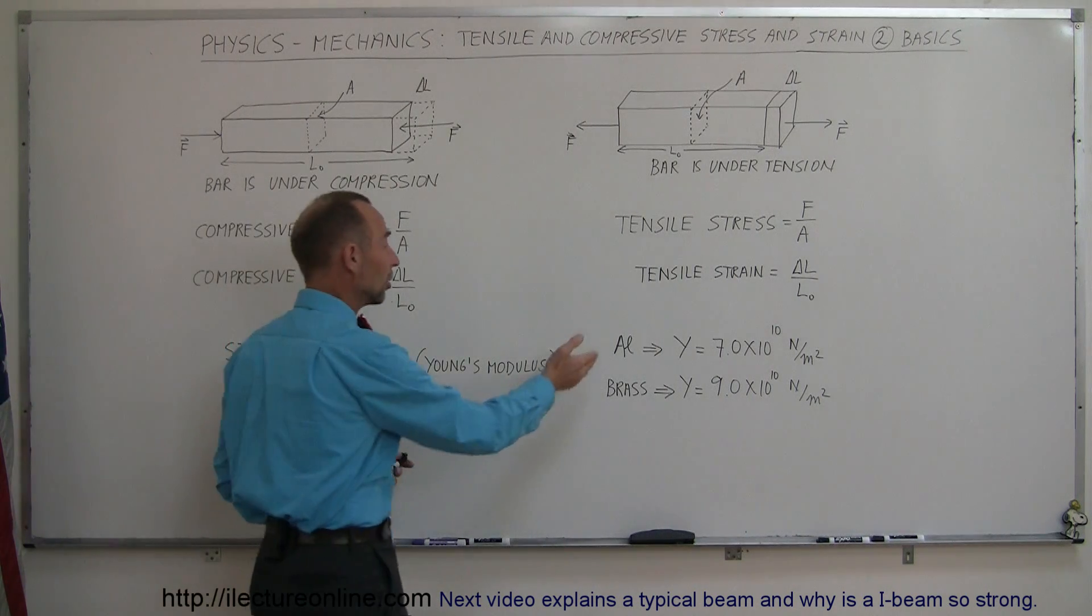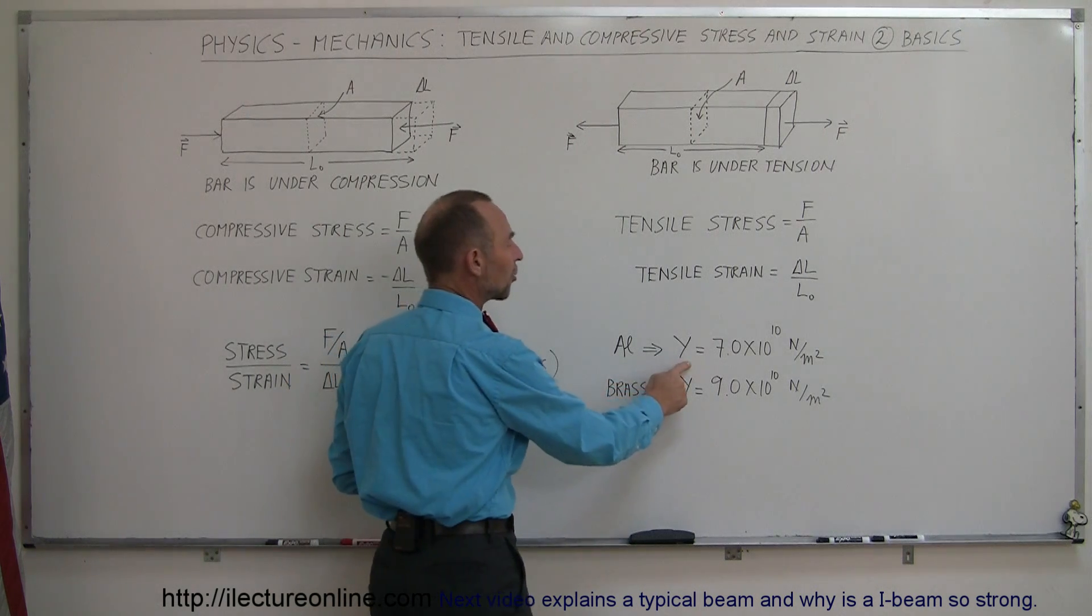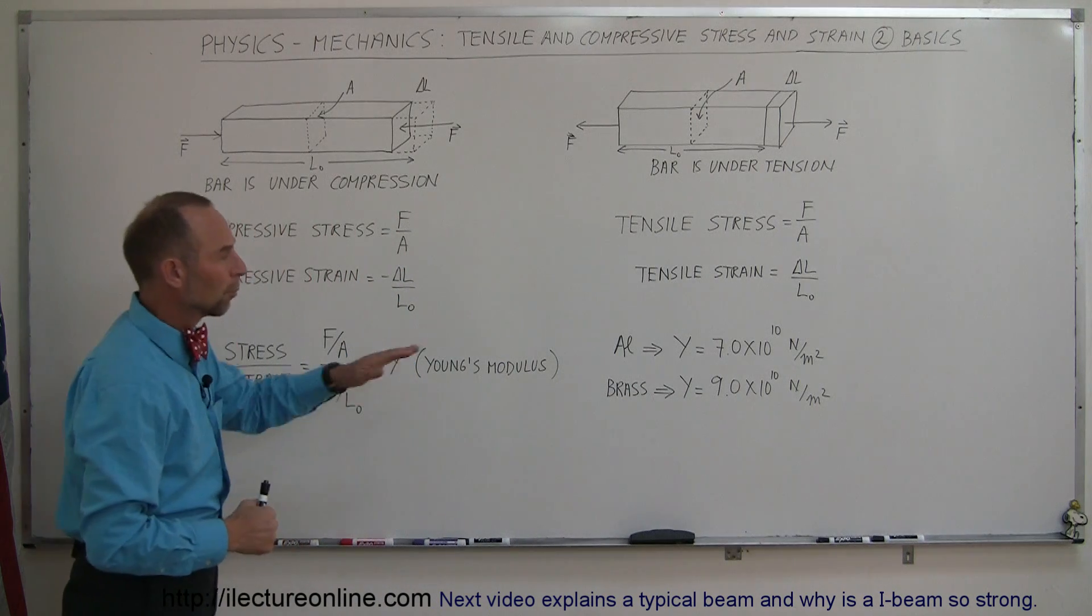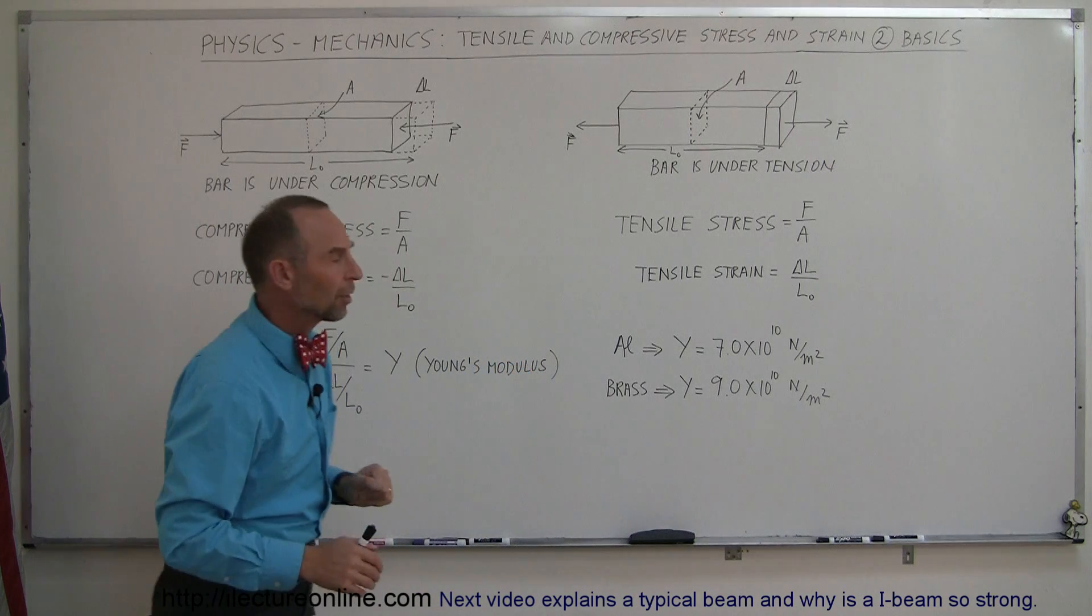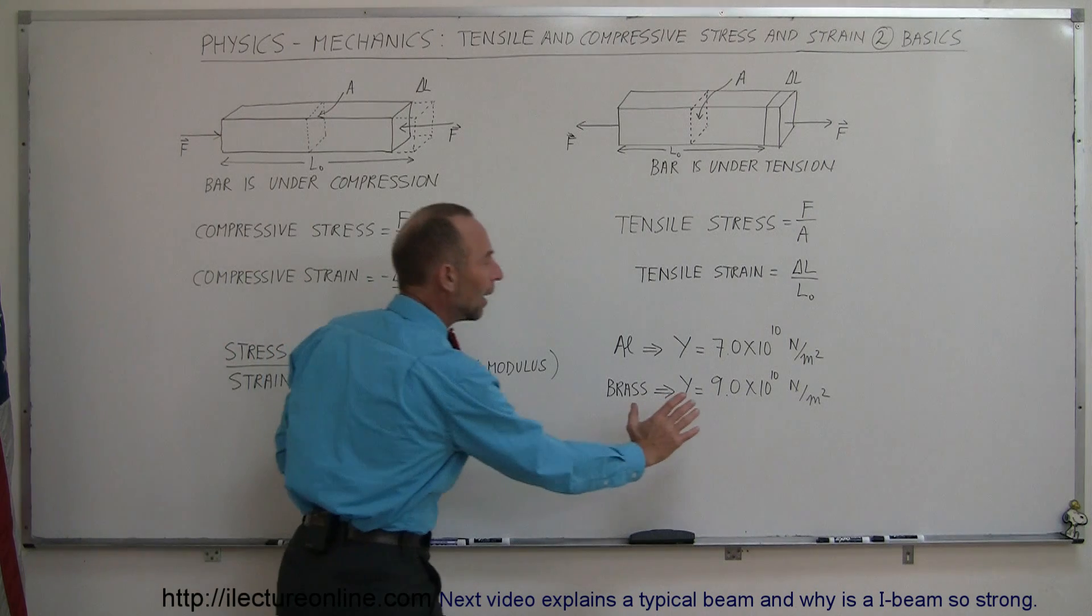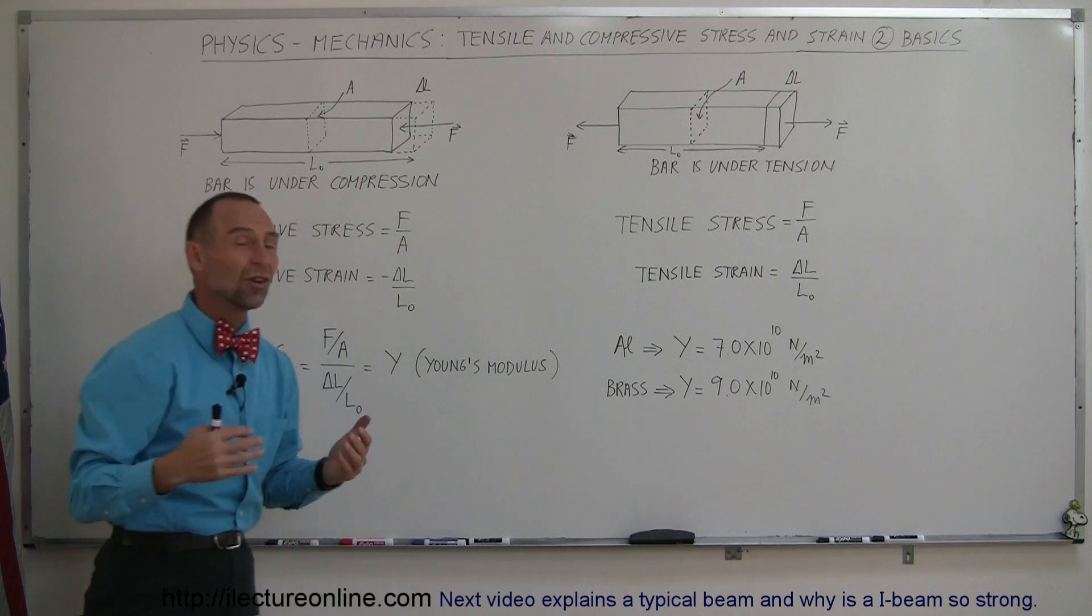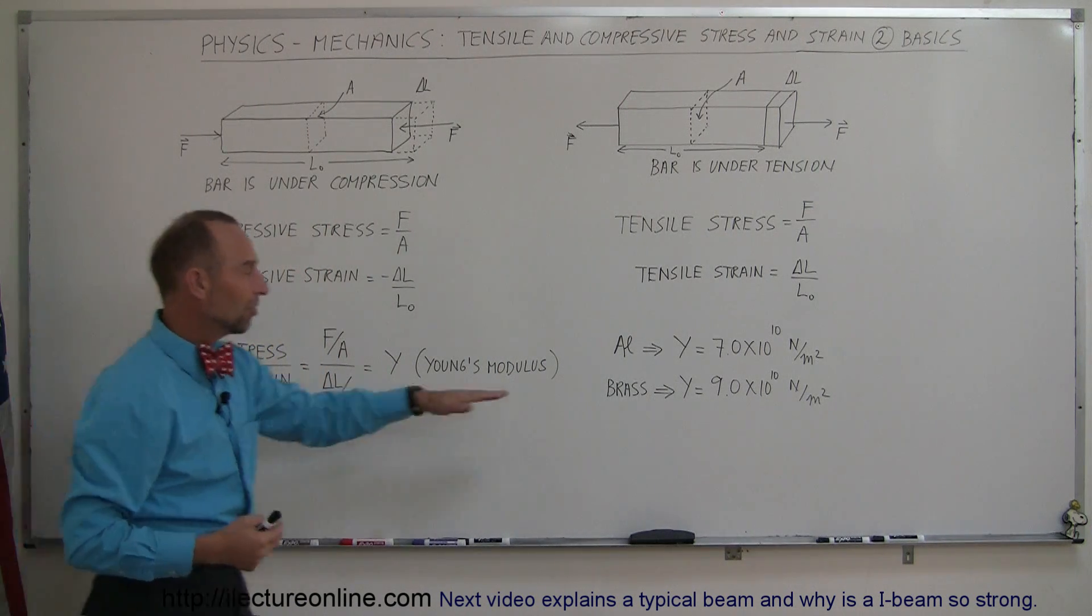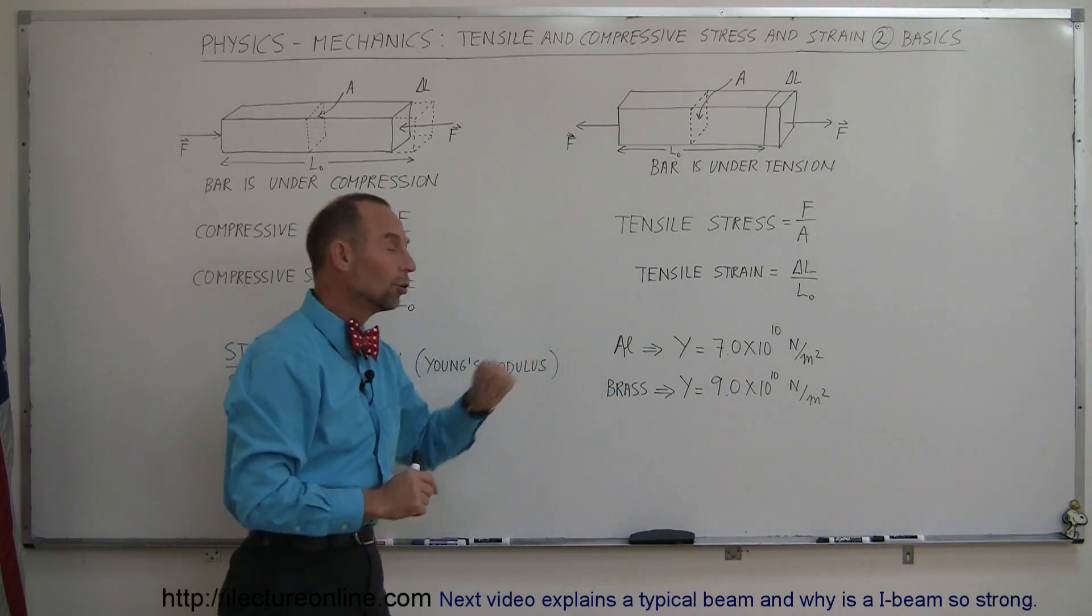As an example, we have two materials: aluminum and brass. Aluminum has a Young's modulus of 7 times 10 to the 10th newtons per square meter. Brass has a Young's modulus of 9 times 10 to the 10th newtons per square meter. Without going into details, from looking at these numbers, which material resists deformation the best? Since brass has a larger Young's modulus, brass resists deformation better than aluminum.